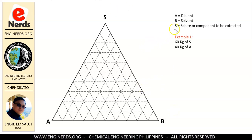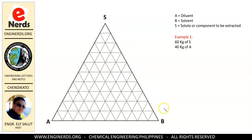S represents the solute or component to be extracted. A is our diluent, and B is our solvent — applicable to the liquid-liquid extraction done in the previous video. Now, every tip of our triangle represents 100% of that component. So the tip labeled S means 100% solute, and as you move away from this tip, the value of S decreases.